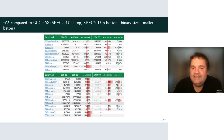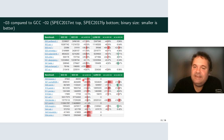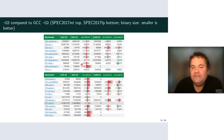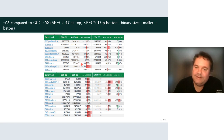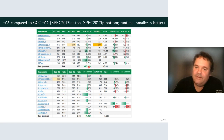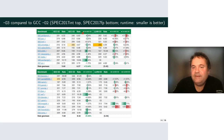Looking at code size at O3: GCC is willing to trade quite a lot of code size for performance. The code growth is about 30% for a speedup of about 13%. For typical integer programs like Perl or GCC, the speedup is somewhere between 3 and 4%.